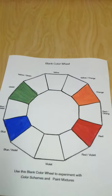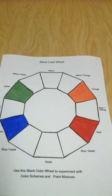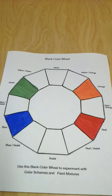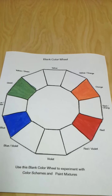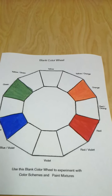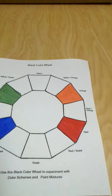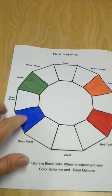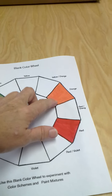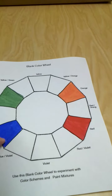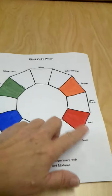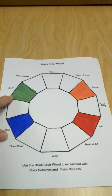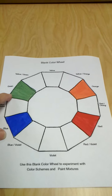This color wheel has complementary colors colored in. Complementary colors are on the opposite side of the color wheel. I have two sets of complementary colors showing right now: blue and orange are complementary because they're on opposite sides of the color wheel from each other, and red and green are also complementary colors for the same reason.